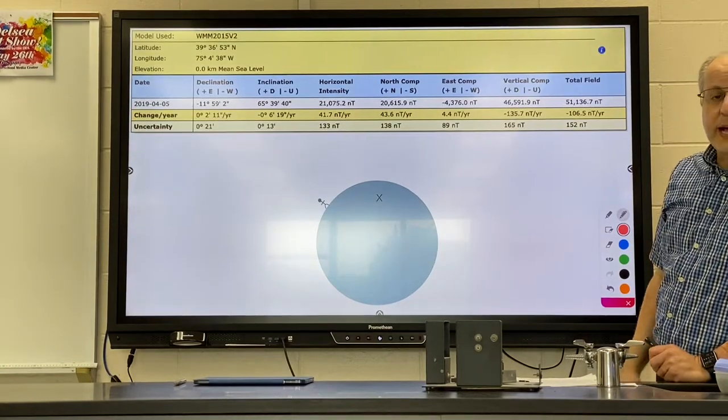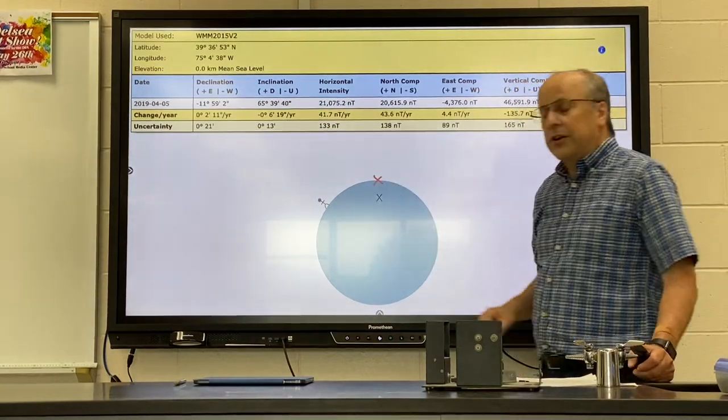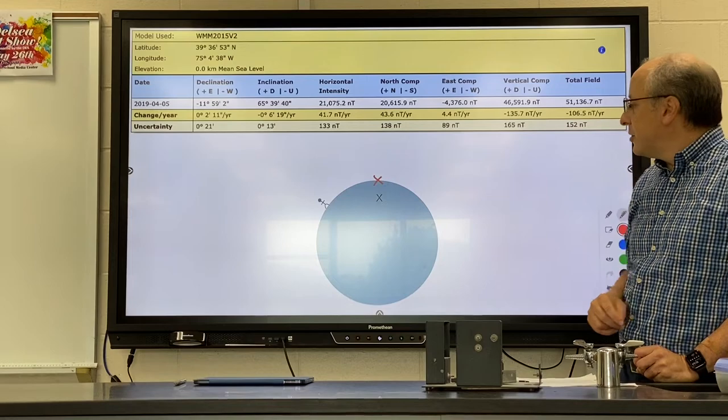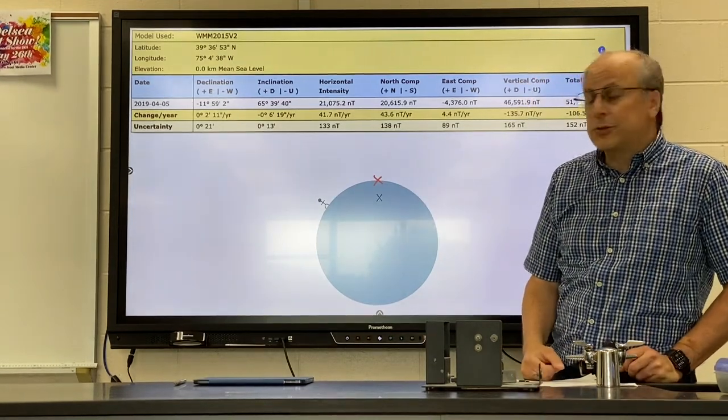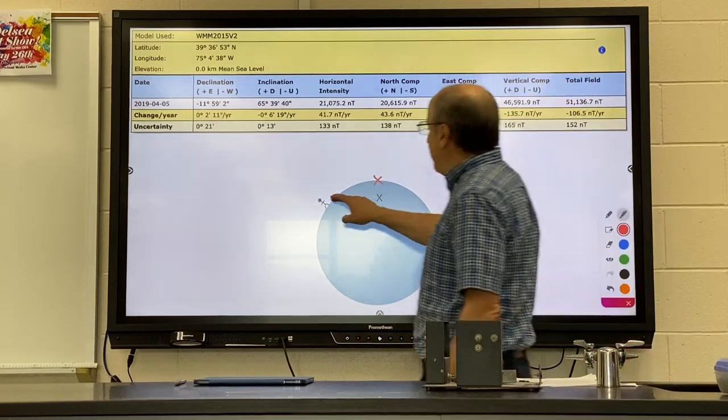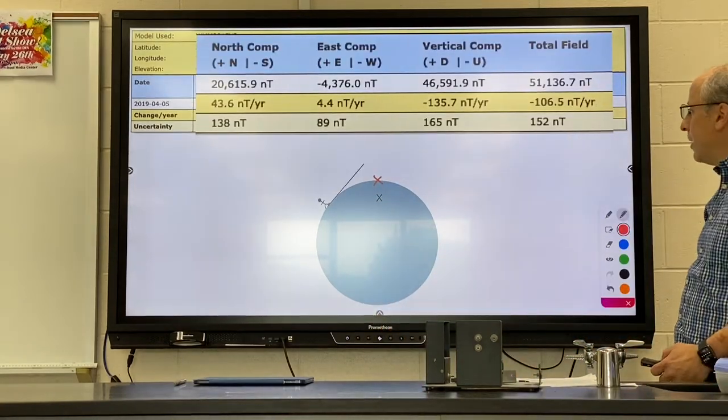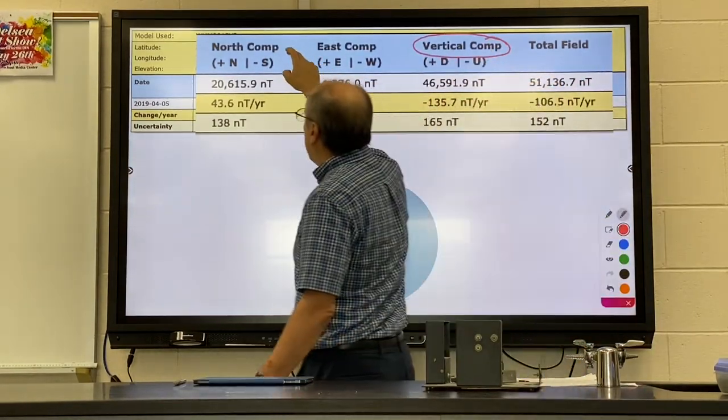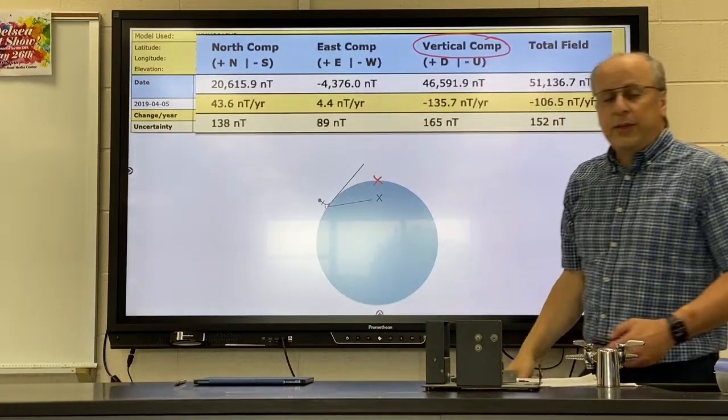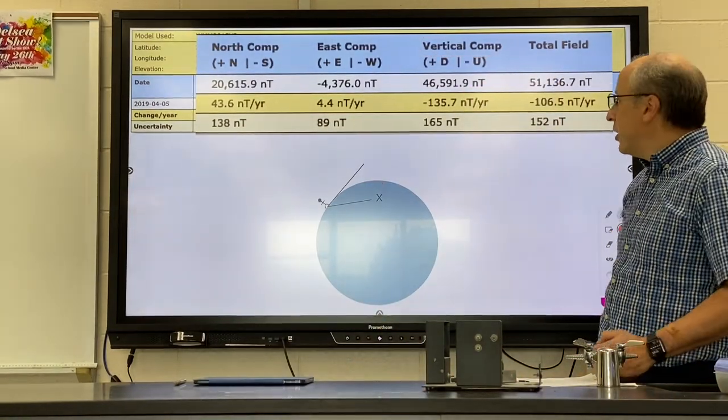I also want you to realize that the magnetic field is not at the surface of the Earth. The magnetic pole is not at the surface, but some depth below the actual surface. Not only that, because of the fact that our Earth is curved, you are going to have a vertical component and the horizontal component to the Earth's magnetic field at each location.